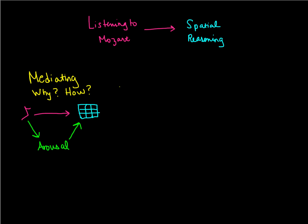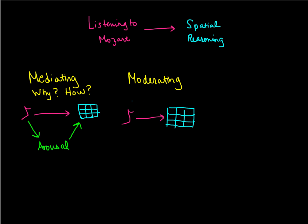There's also a possibility that a relationship can be affected by some type of moderating variable. Going back to our original example — listening to Mozart affecting spatial reasoning — when we're dealing with a moderating variable, what we care about is: for whom does this relationship apply, does it apply for different people, when does it apply, and does it apply under different conditions?